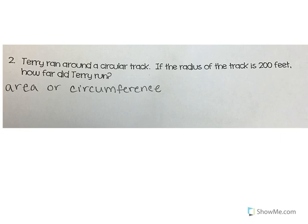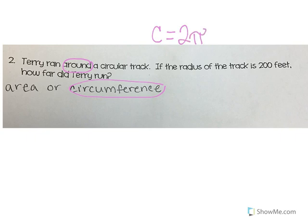Terry ran around a circular track. The radius of the track is 200 feet. How far did Terry run? Am I talking about circumference, or am I talking about area? She's running around a circular track, so if she's running around it, I'm talking about circumference. I have two formulas: circumference equals 2πr, or circumference equals π times diameter. Did it give me the radius or the diameter? It gave me the radius, so I'm going to use that one.